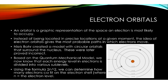Electron orbitals. An orbital is a graphic representation of the space an electron is most likely to occupy. Instead of being located in precise locations at a given moment, the idea of an electron orbital gives us the most probable path in which the electron would move.